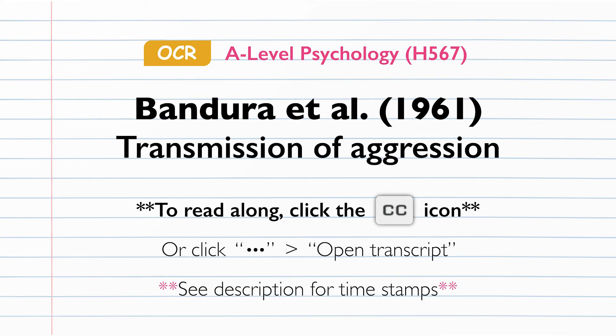The main conclusions drawn by the researchers were that children will display imitative aggression based on an adult model's behaviour, even when the child believes the model is not present during imitation. This supports social learning theory. They found that behaviour modelled by a male model has greater influence on children's physical behaviour regardless of the child's sex, and that children are likely to learn verbal aggression from a same-sex adult.